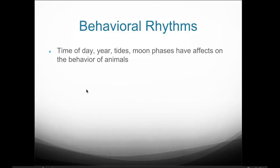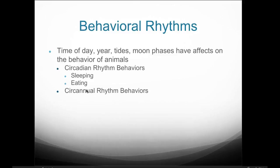Behavioral rhythms include things such as time of day, time of year or season, tides for creatures living in an estuary, and moon phases, which have an effect on animal behavior especially reproductive behavior. A circadian rhythm includes behaviors like sleeping and eating. Circannual rhythm behaviors include such things as hibernation and mating.